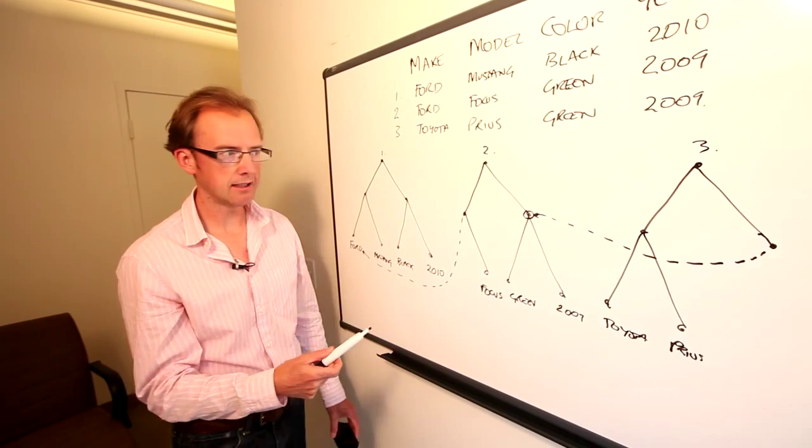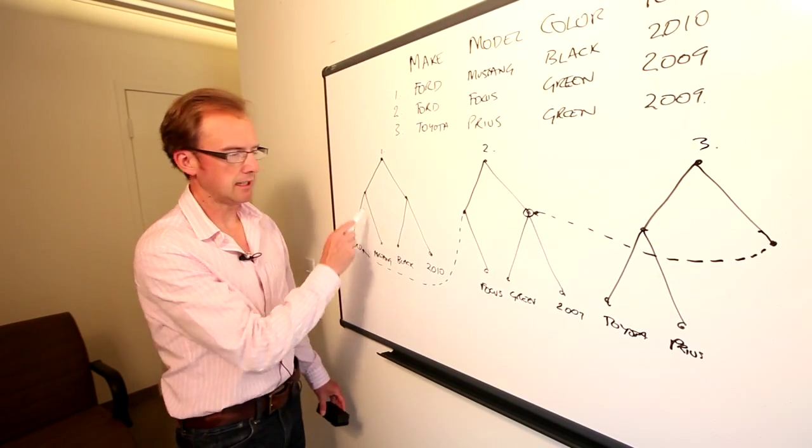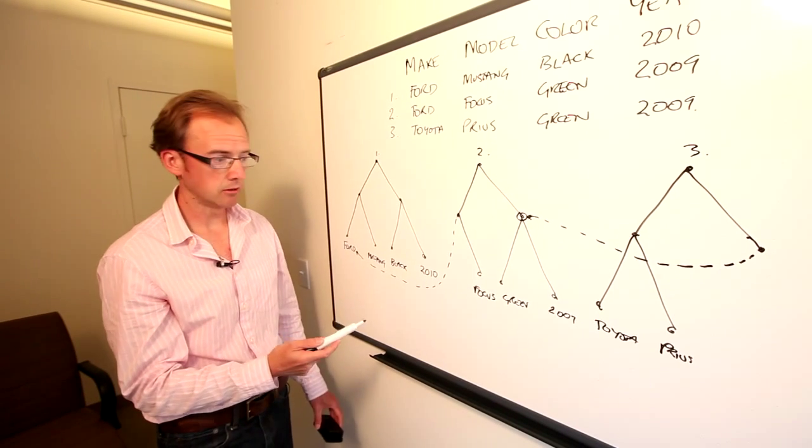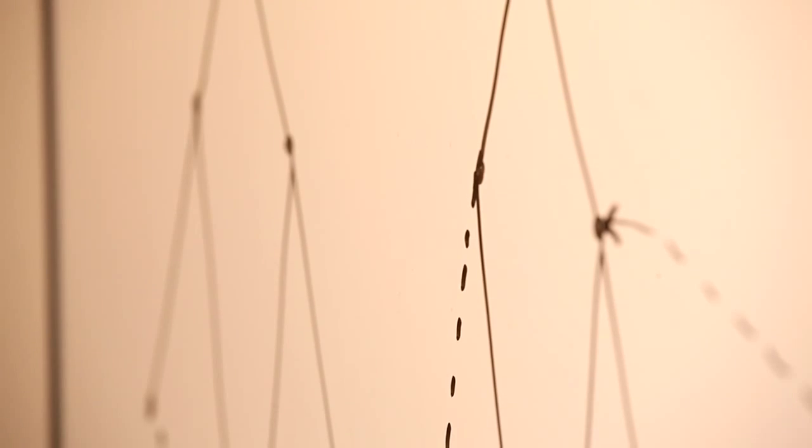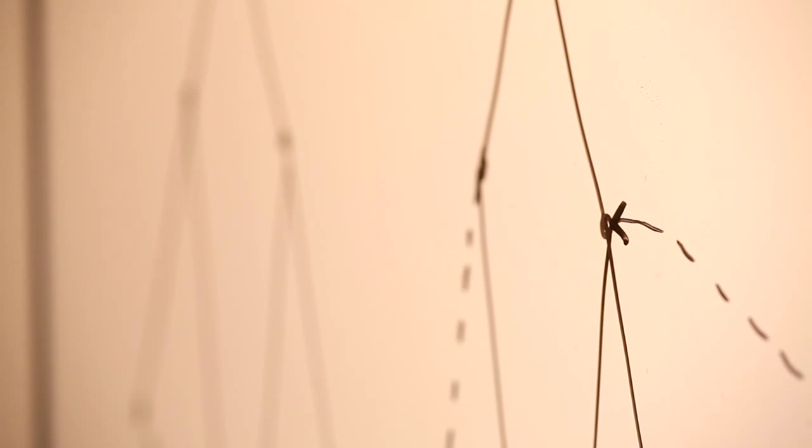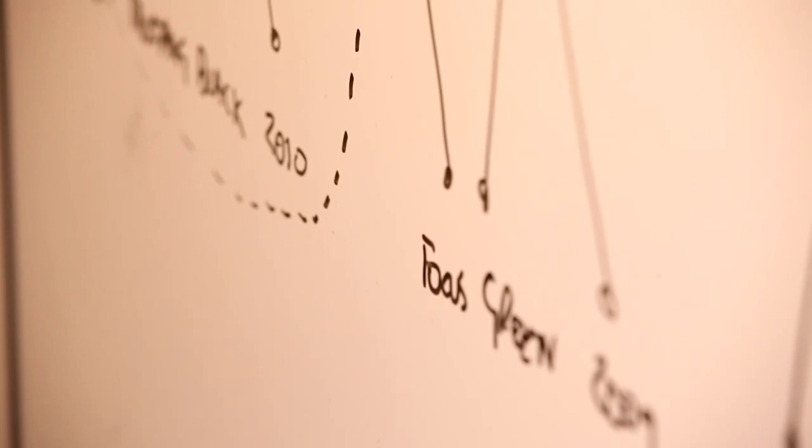Now for certain pathological cases, this branch structure here is still introducing overhead, of course. But in general, what you find is the branches are much smaller with respect to the overall data volume compared to the leaves. And so this is where we get our high degree of compression from.